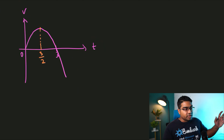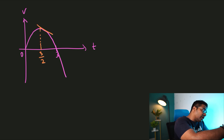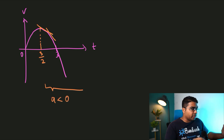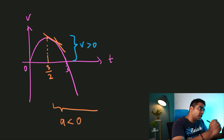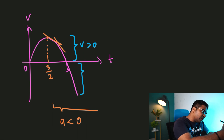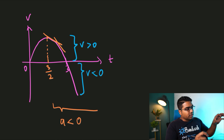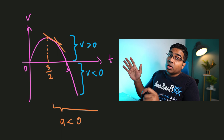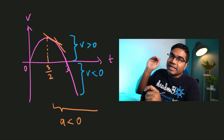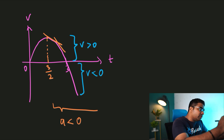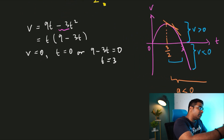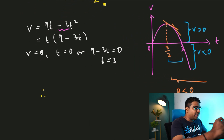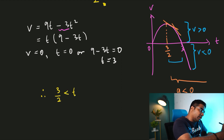From t = 3/2 onwards, the gradient of the graph is negative, meaning acceleration is in the negative direction. However, looking carefully at velocity, the velocity is only positive between 0 and 3 seconds. After 3 seconds, the velocity becomes negative as well — in the same direction as the acceleration — so the object is no longer decelerating but accelerating in the opposite direction. Therefore, the time in which the object is decelerating is between 3/2 and 3 seconds.